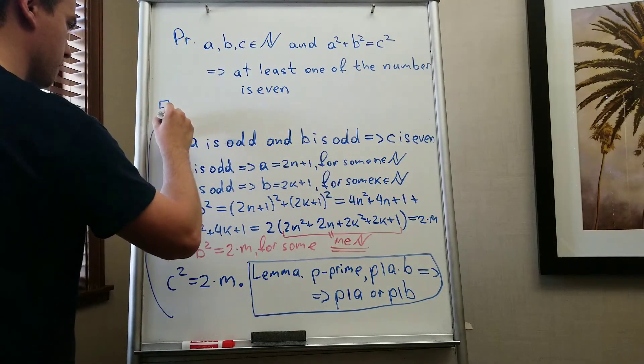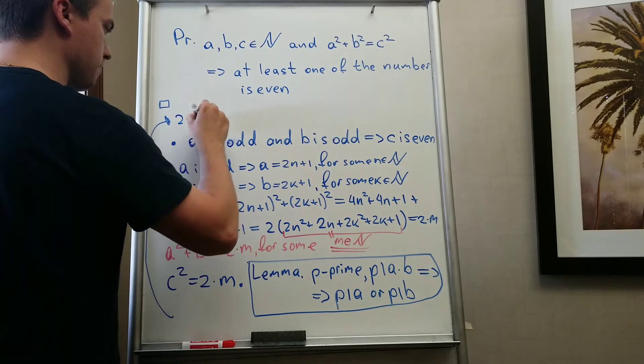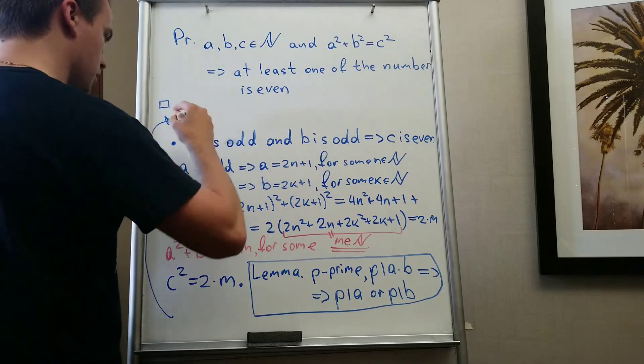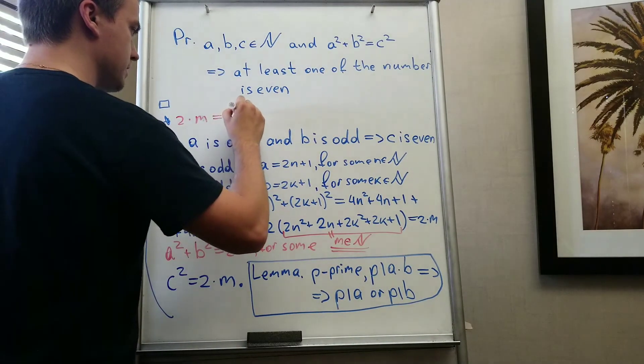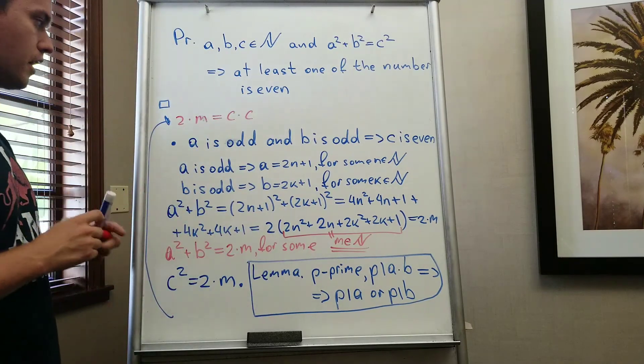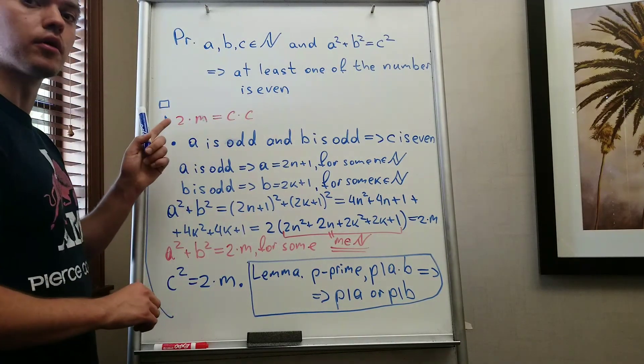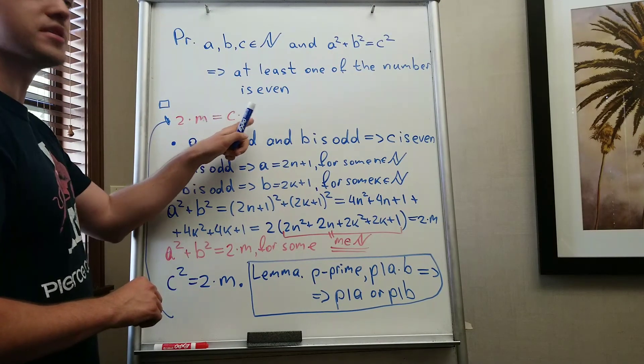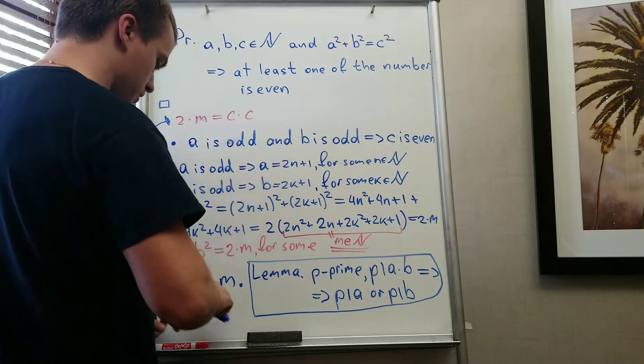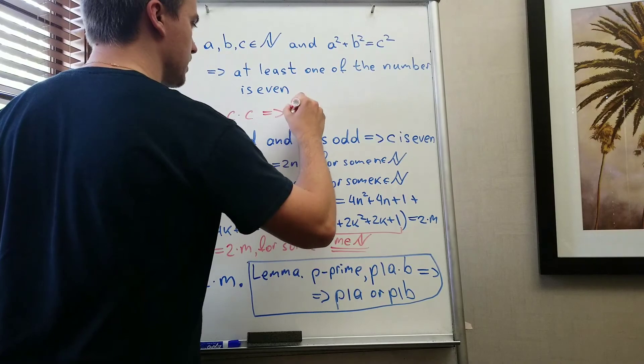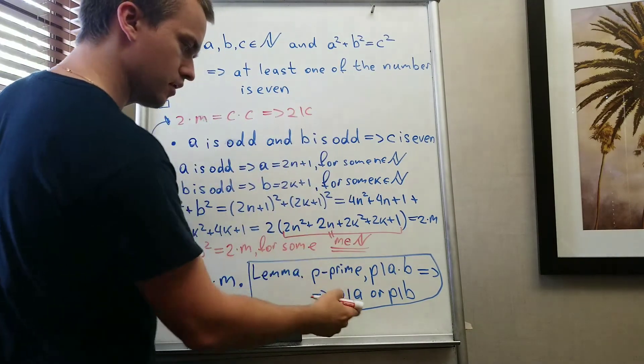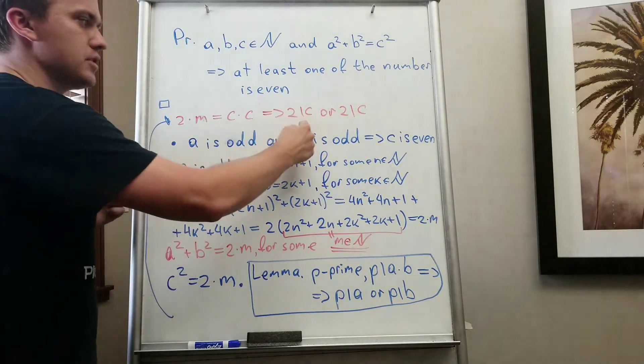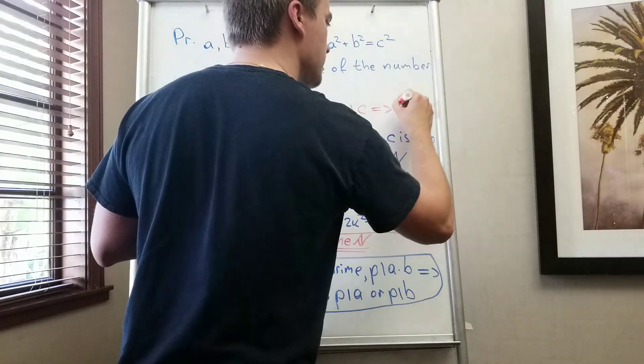I'm going to continue my proof over here. I have that 2 times m equals c times c. So 2 is a prime number and 2 divides c times c, so 2 must divide at least one of the c. So from here I will get that 2 divides c or 2 divides c. But either of the statements will give you that 2 divides c.